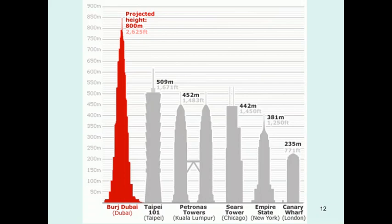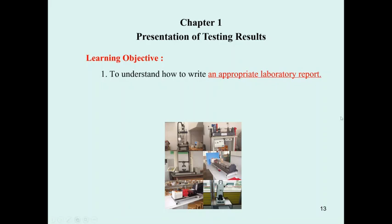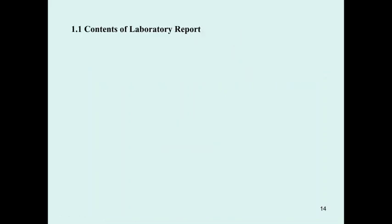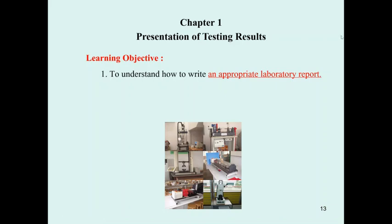I'd like you to see some important slides about the Burj Khalifa, currently the tallest building in the world, along with Taipei 101 — three of the top buildings are in Asia. The construction industry in Asia is really prosperous compared to the Western world, so this is a bright future for us. That is the introduction to this course. We will talk about chapter one — the presentation of testing results — next time. Bye for now.